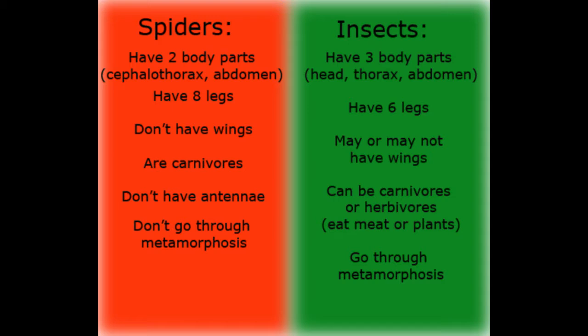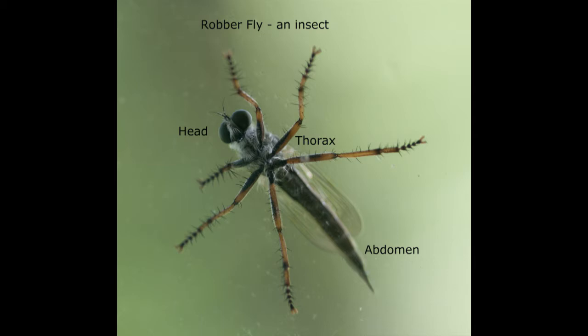As an environmental educator, I'm often asked: how do you tell the difference between a spider and an insect? It's very easy. Insects always have three body parts and six legs. They may or may not have wings. The head of an insect has compound eyes, as you can see on this rubber fly here. The head also has the mouth — there are four different types of mouths, which I'm not going to get into in this video. The head can also have antennae. Spiders never have antennae.